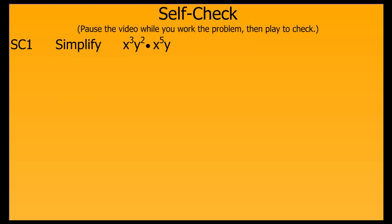Now for the self-check section. In this section, you're going to physically pause the video as you work out the problem on paper in your notebook. Then you'll press play to check to see how you did. You'll have five seconds to pause the video after I stop speaking before I show you the solution. Please pause the video now and work out the problem, then press play to check. Here is the solution. Please compare this to your work.